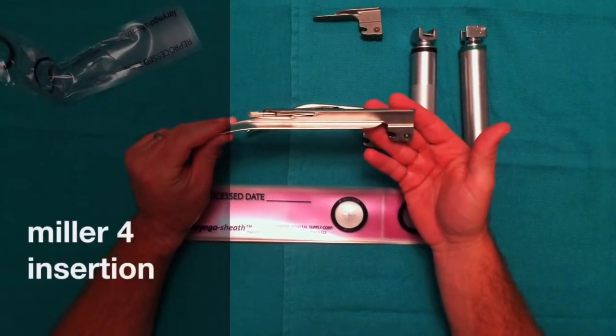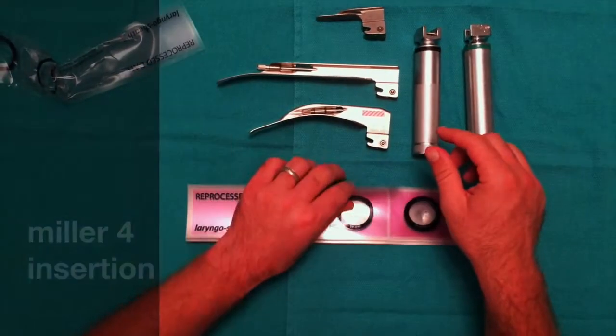Next, we will demonstrate how to insert a Miller-4 laryngoscope blade into the laryngoscope sheath.